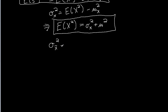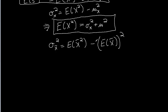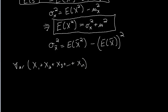The variance of the sample mean is E[x̄²] minus (E[x̄])². Now we also know that if we have n random variables x₁ + x₂ + … + xₙ that are independent and share the same distribution as x, then the variance of the sum is just the sum of the variances. That was in theorem 3.2.9 for continuous random variables. So that's n times the variance of x.